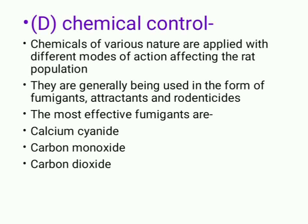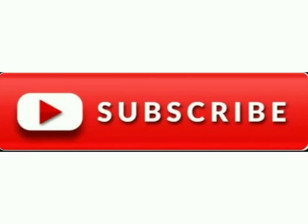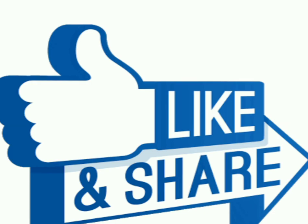Chemical control: chemicals of various nature are applied with different modes of action affecting the rat population. They are generally used in the form of fumigants, attractants and rodenticides. The most effective fumigants are calcium cyanide, calcium monoxide and carbon dioxide. If you like my video, please subscribe to my channel, like this video and share it with your friends. Thank you.